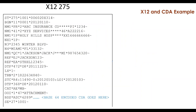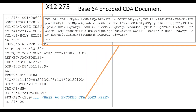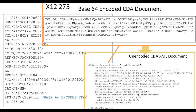This slide gives more detail on what it actually looks like behind the scenes. We have a sample X12 275 transaction. Notice the BDS segment — it contains Base64-encoded CDA. If you extract and unencode that Base64 content, what you end up with is an unencoded CDA XML document. This represents a subset of the metadata we'll be talking about, and this is basically what CDA XML looks like in its raw form.